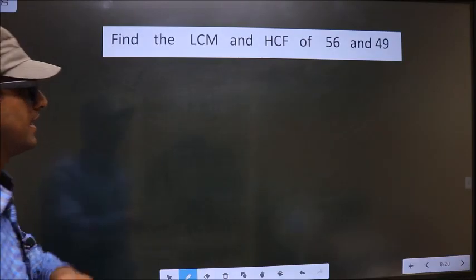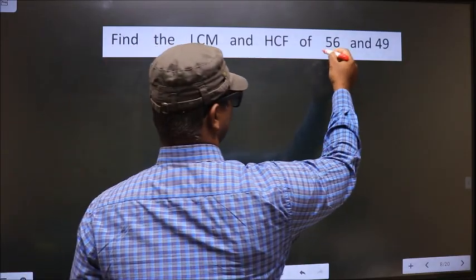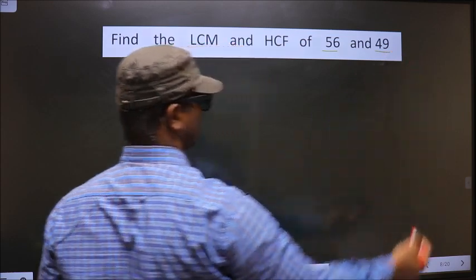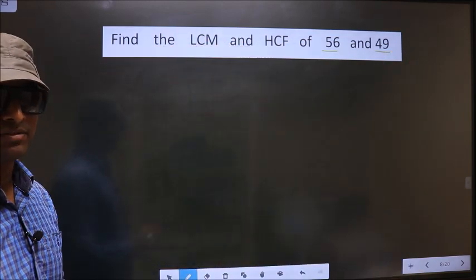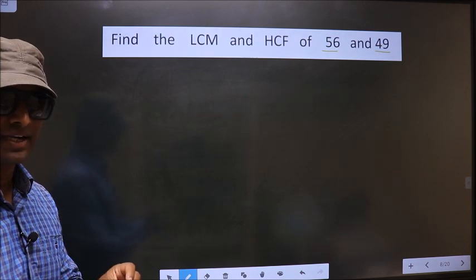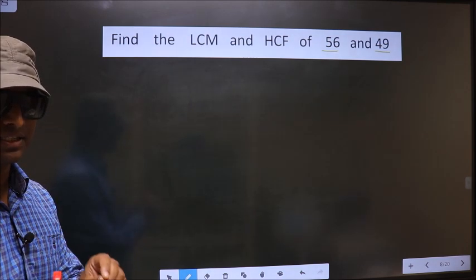Find the LCM and HCF of 56 and 49. To find the LCM and HCF, first we should do the prime factorization of each number separately.